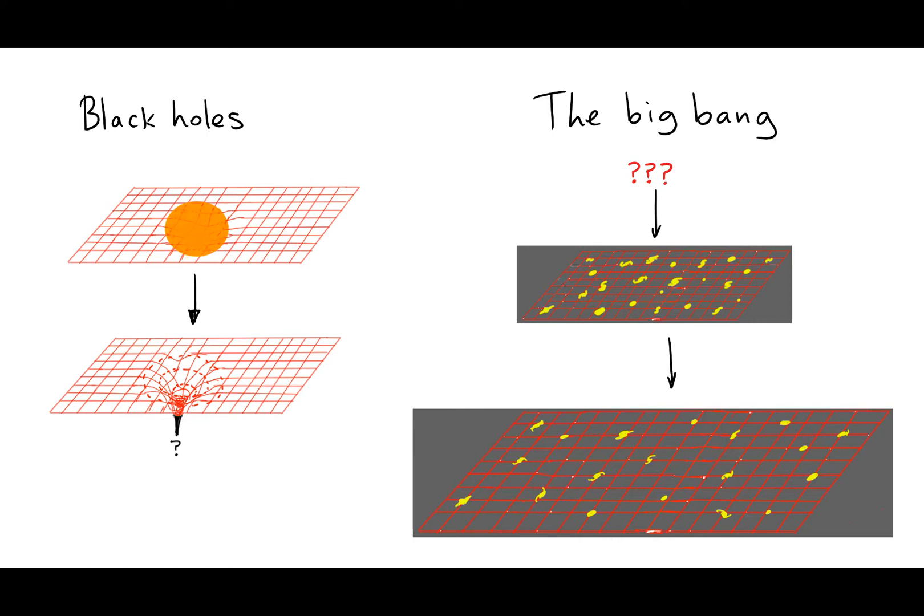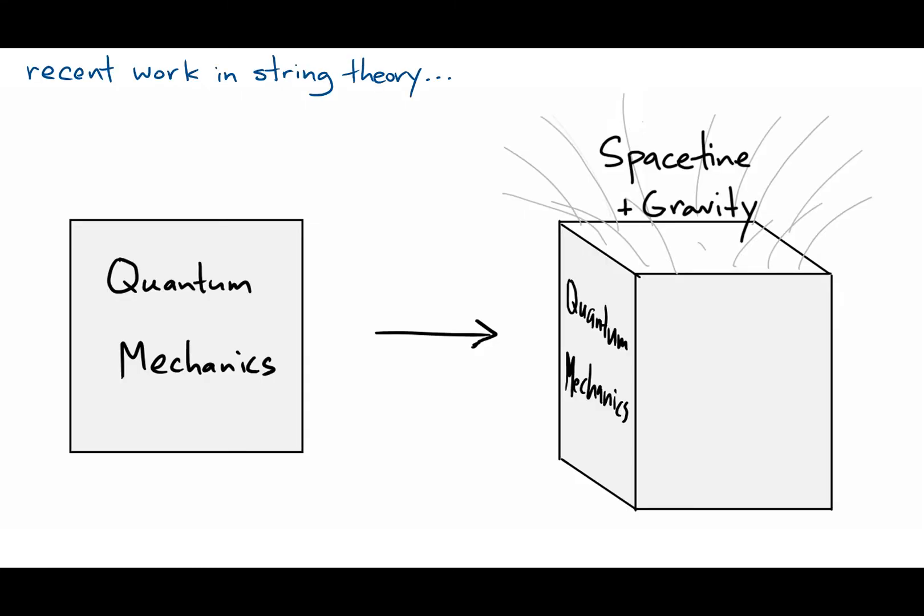In recent years, researchers in string theory have encountered a startling revelation. Even in ordinary situations, Einstein's geometrical picture of gravity can be seen to emerge from an even more fundamental description, and that description is inherently quantum mechanical.